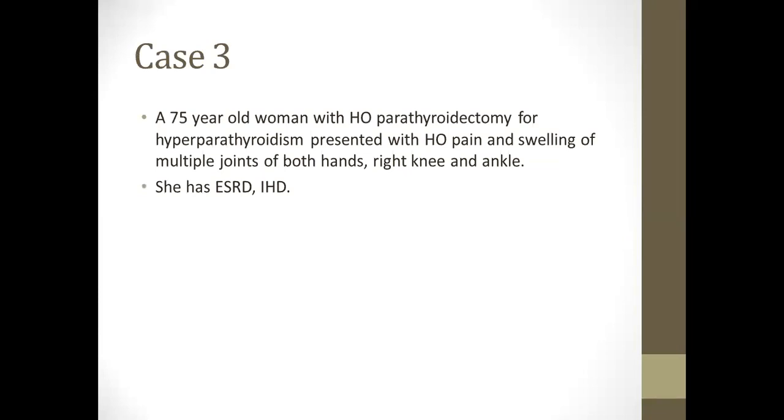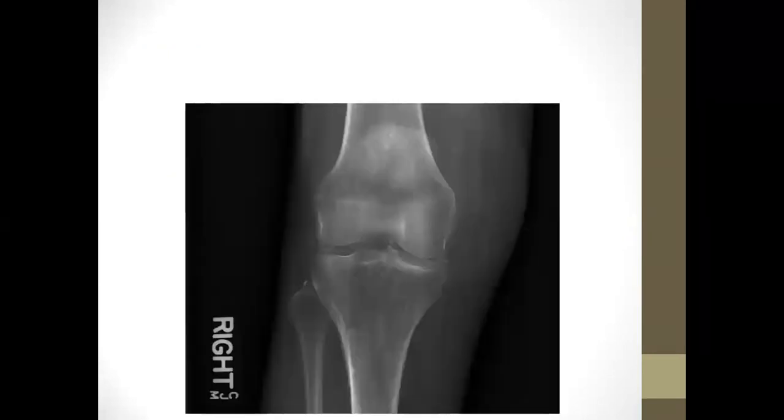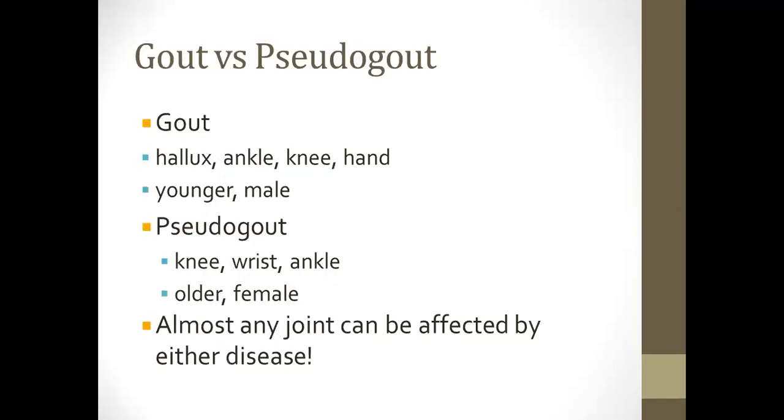This is a case of a 75-year-old lady with history of parathyroidectomy for hyperparathyroidism who presented with pain and swelling of multiple joints—both hands, right knee, and ankle. She has end-stage renal disease and ischemic heart disease. This was her knee joint X-ray, which shows chondrocalcinosis, and the diagnosis of pseudogout was established.